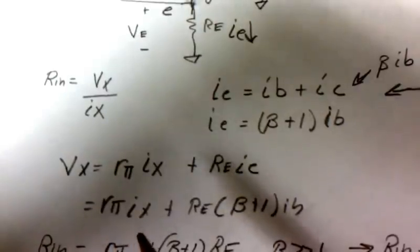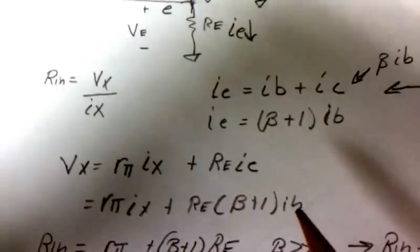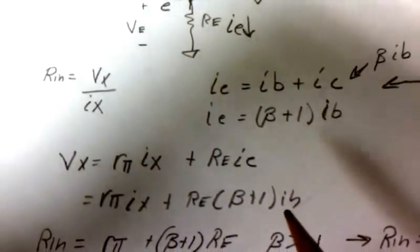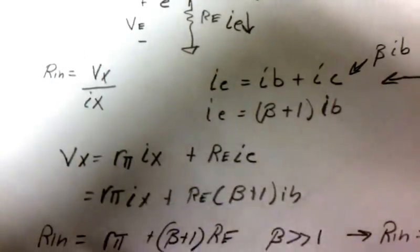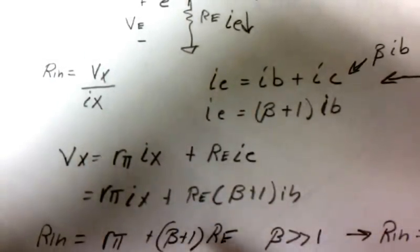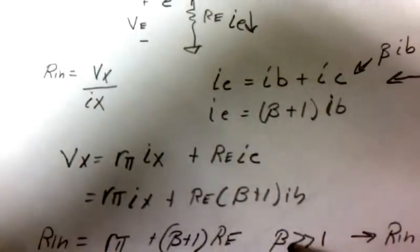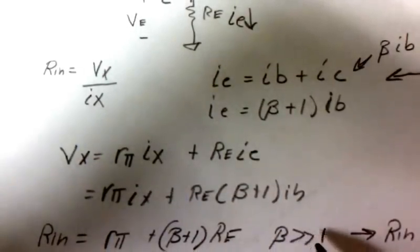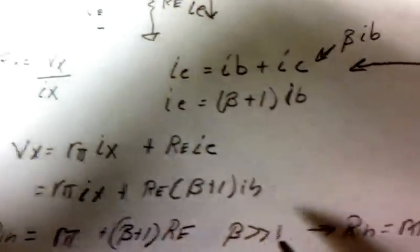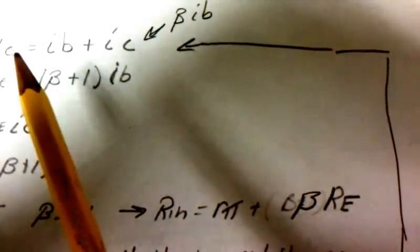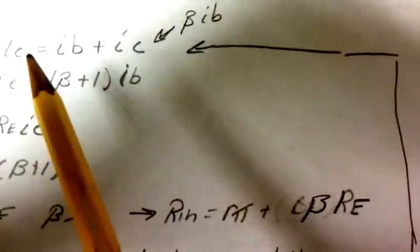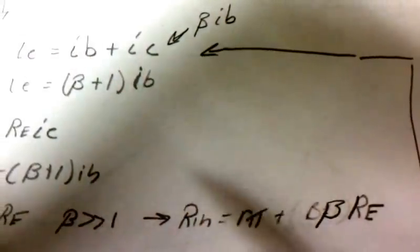Further solving, you get this equation, and then I get RN equals R pi plus (beta+1)*RE. Now beta is a lot bigger than one, and so we can set it to RN equal to R pi plus beta*RE, and we would get the same result as if back here we had just said ie is approximately equal to IC.